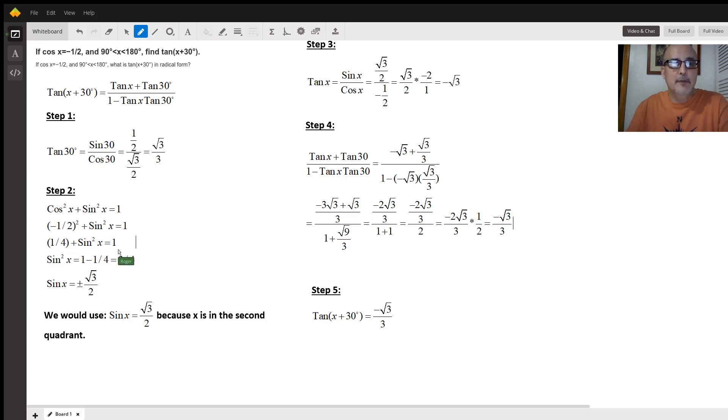Subtract one fourth from both sides and I get sine squared x equals three fourths. Then I take the square root of both sides and I get the sine of x equals plus or minus the square root of three over two.